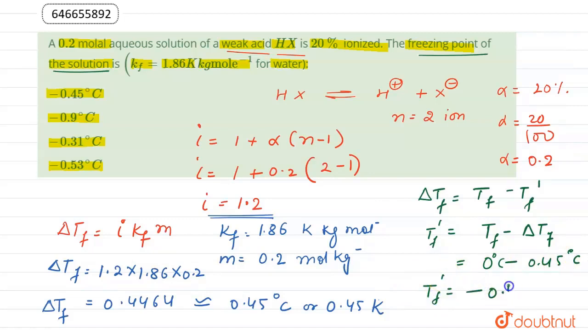So here we get Tf dash equal to minus 0.45 degree centigrade. So according to this solution, the correct option for this question is option a: minus 0.45 degree centigrade is freezing point of a solution in which molality is 0.2 m and ionization is 20 percent. Thank you.